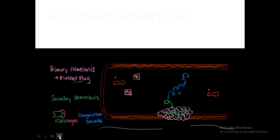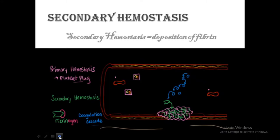The third point is secondary hemostasis, which is the deposition of fibrin. Along with von Willebrand factor, tissue factor is also exposed. Tissue factor is a membrane-bound procoagulant glycoprotein that is normally expressed by subendothelial cells in the vessel walls, such as smooth muscle and fibroblasts. After this, thrombin is generated, with binding and activation of factor 7, which clips circulating fibrinogen to fibrin. Fibrinogen is a protein converted to fibrin.